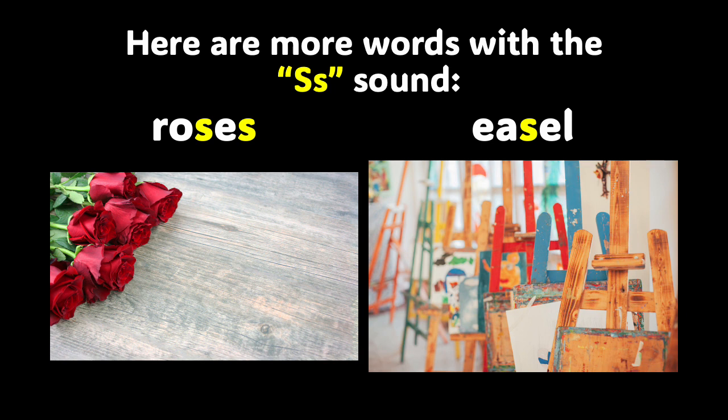These two words also have the S sound in the middle of them: roses and easel. The S in these words sort of sounds like a Z, and that is because these words were borrowed from the French language. In French, whenever the S is in between two vowels, the S will make the sound of Z. Let's say these words again: roses, easel. You sound terrific.